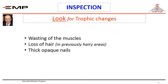The last thing to look for in inspection are the trophic changes. You may notice wasting of the muscles, loss of hair in a previously hairy area, or thick opaque nails. All are possible findings in chronically ischemic limbs.